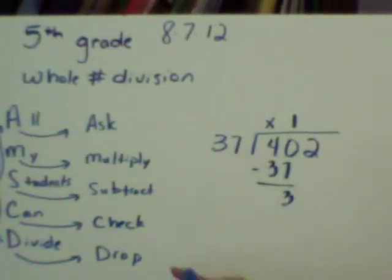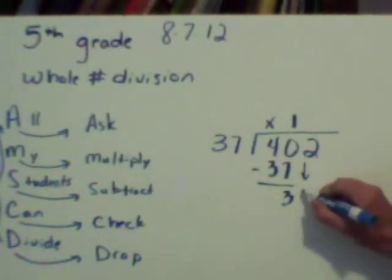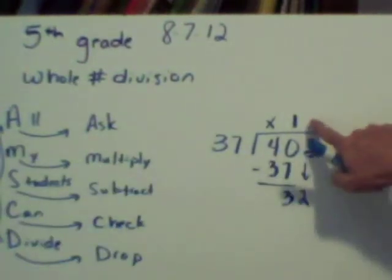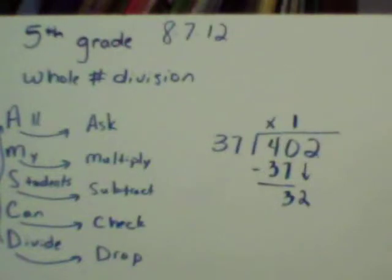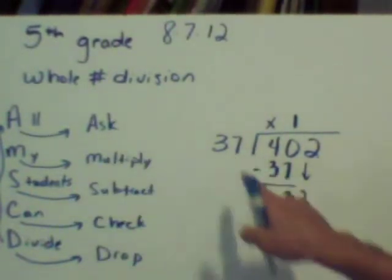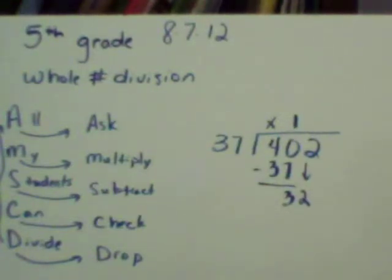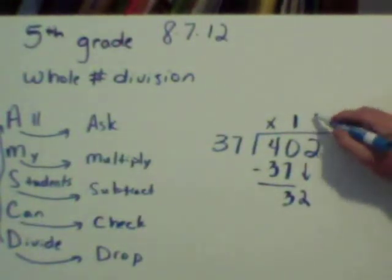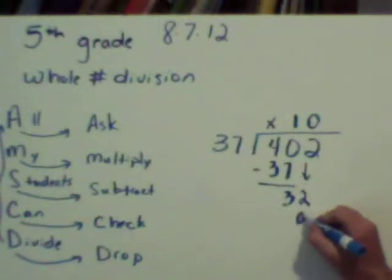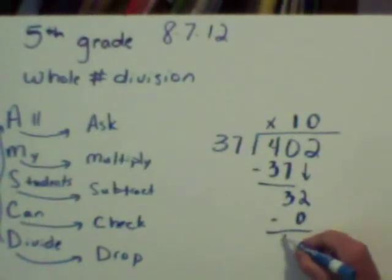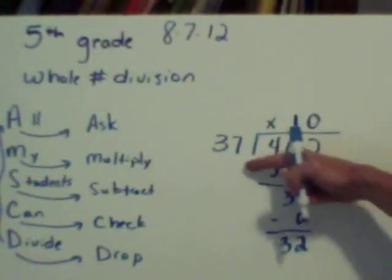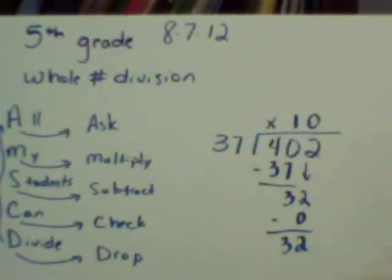So I've checked. 3 is less than 37. So now I can drop. And I can drop this 2 right down. And that brings me right back up to the top because I still have an empty spot here. I don't have anything above here. I'm going to go back to ask. Ask myself, how many groups of 37 can I make if I have 32? Well, I can't make any. So that's going to be a 0. And then I go back to multiply. 37 times 0 is 0. Subtract. I'm going to check. Is 32 less than 37? Yes, it is.